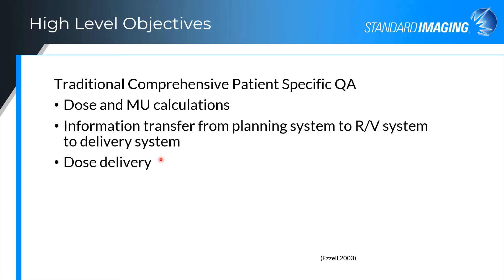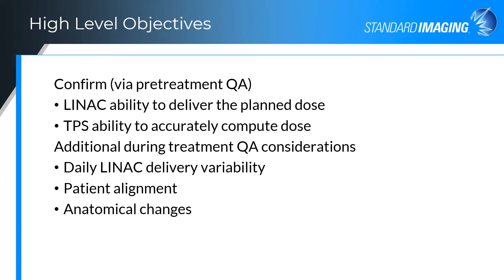At that time, patient-specific QA was primarily pre-treatment focused. Dose delivery should also be confirmed and verified throughout the course of patient treatment in order to allow for plan adjustment if required to compensate for patient alignment, anatomical changes, and delivery system variability. The high-level objective is to confirm the LINAC's ability to accurately deliver the planned dose to the tumor, as well as not deliver more dose than planned to the organ at risk.